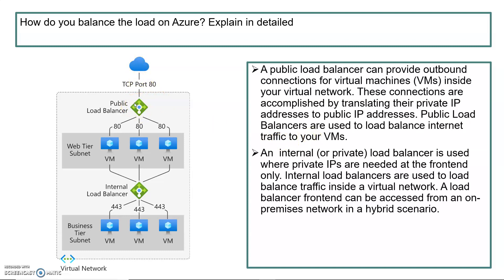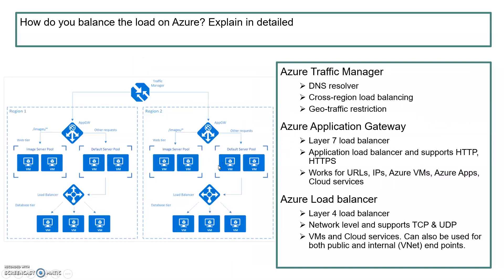The public load balancer takes outbound traffic from the public domain and translates it into the private IP. An internal load balancer is used where private IPs are needed at the front end only, and is used to load balance traffic inside your virtual network. There are three types of load balancers to address the various types of traffic coming to your Azure resources: Azure Traffic Manager, Azure Application Gateway, and Azure Load Balancer.